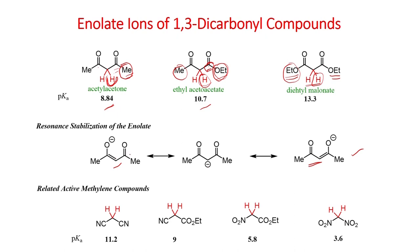Here, the resonance stabilization of the enolate of acetyl acetone is shown. When you deprotonate, you generate the carbanion, which can be stabilized by the carbonyl group as an enolate. This is the resonance stabilization of the enolate, and here some of the other active methylene compounds are shown.